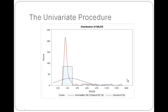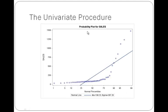This is the distribution graph from the univariate procedure output. We can see that the data are not very symmetric and are more skewed to the right, consistent with a Poisson distribution. The probability plot for the sales also shows a curve indicating the Poisson distribution, and there is potential for outliers as well as the overdispersion problem, as you can see from these observations.